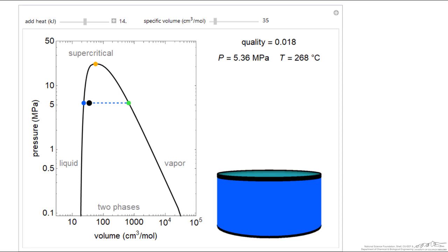Notice what happens as we continue to add heat. Now the quality, which was increasing, is now decreasing again. And we're approaching the point where we have all liquid. So add a little more heat. I've crossed the saturated liquid line. The liquid expanded as we raise the temperature and pressure, and the vapor condensed until we have all liquid.